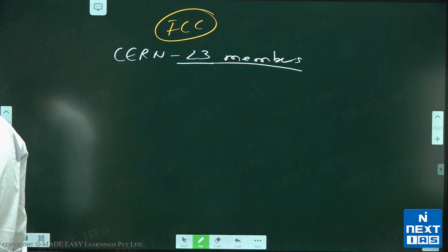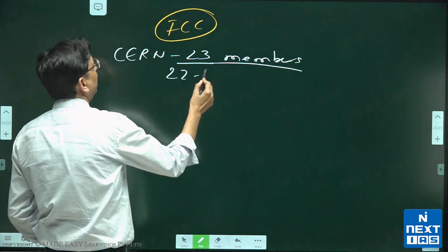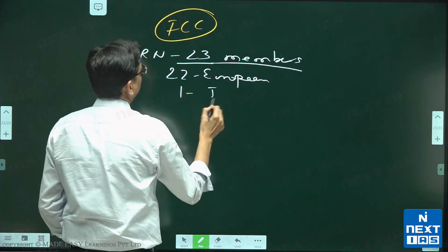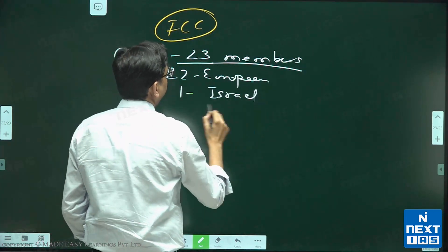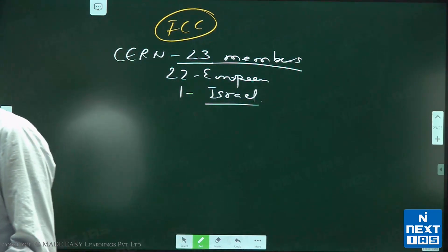The answer is 22 are European countries and one is Israel. So Israel is a member of CERN.